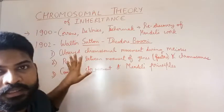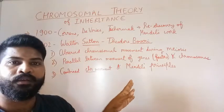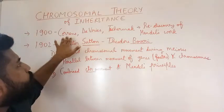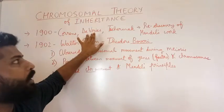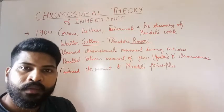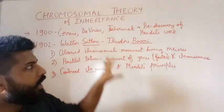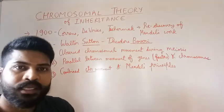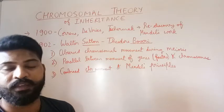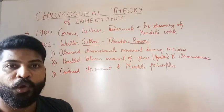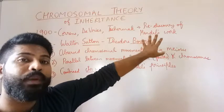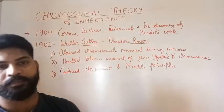Then three scientists — Carl Correns, Hugo de Vries, and van Tschermak — carried out their own individual experiments and all three individually found that Mendel's work was of great importance and significance in understanding heredity and variation. So 1900 marks the rediscovery of Mendel's work by these three scientists.